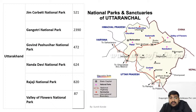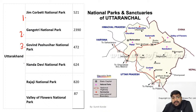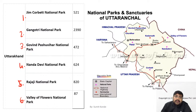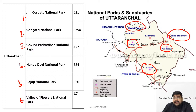Next is Uttarakhand. In Uttarakhand, the national parks are: Jim Corbett (the oldest/first national park of India), Gangotri, Govind Pashu Vihar National Park, Nanda Devi, Rajaji, and Valley of Flowers National Park. Total 6 national parks in Uttarakhand. Nanda Devi, Valley of Flowers, and Govind Pashu Vihar are in the upper Himalayan region. Corbett is slightly towards the Shivalik side, and Rajaji is near Dehradun.